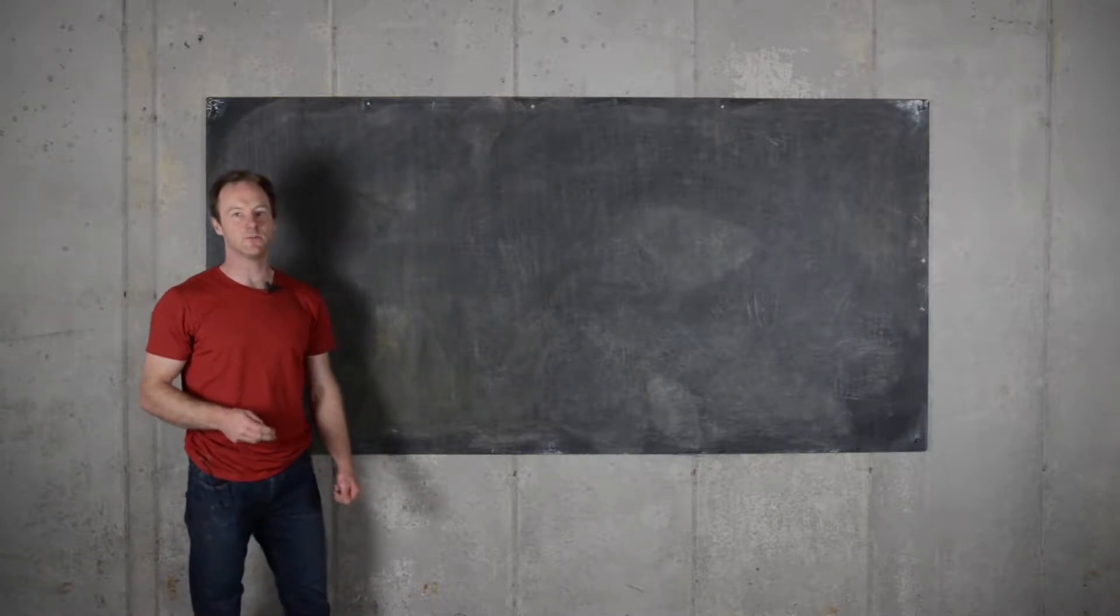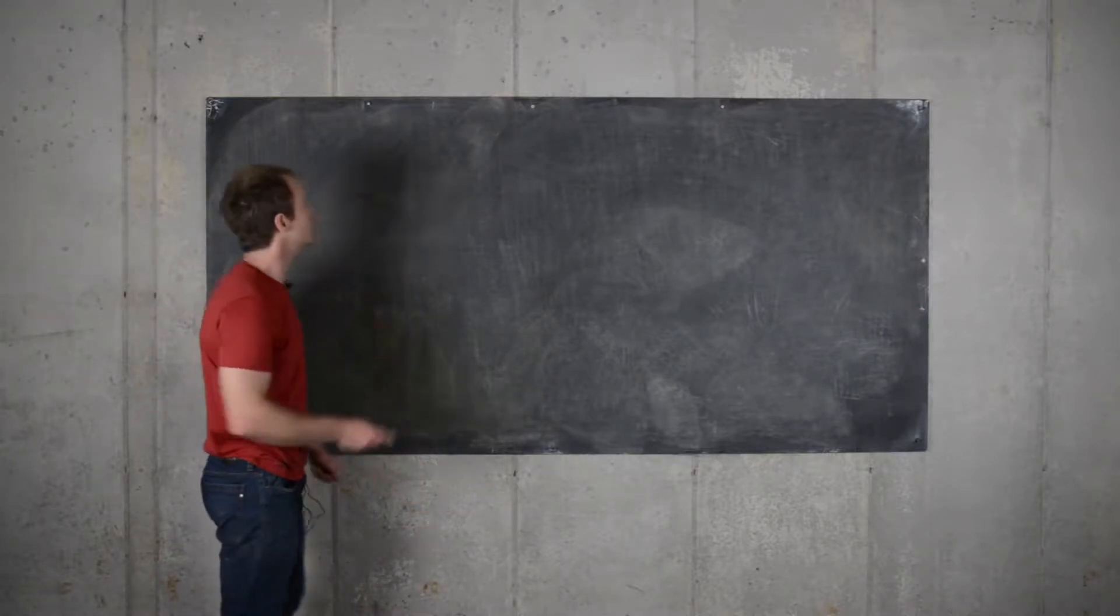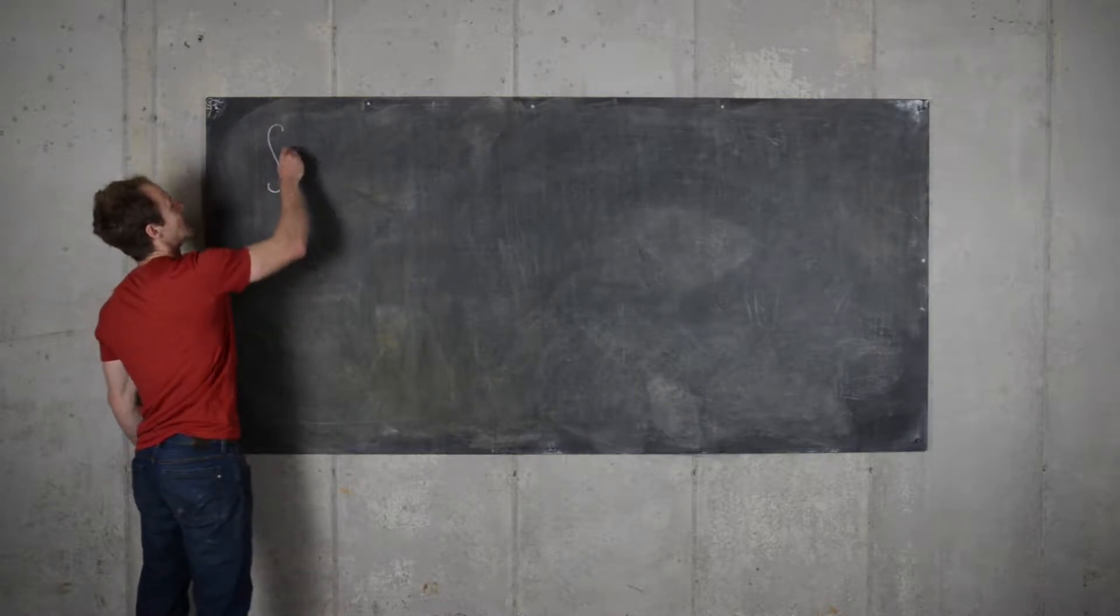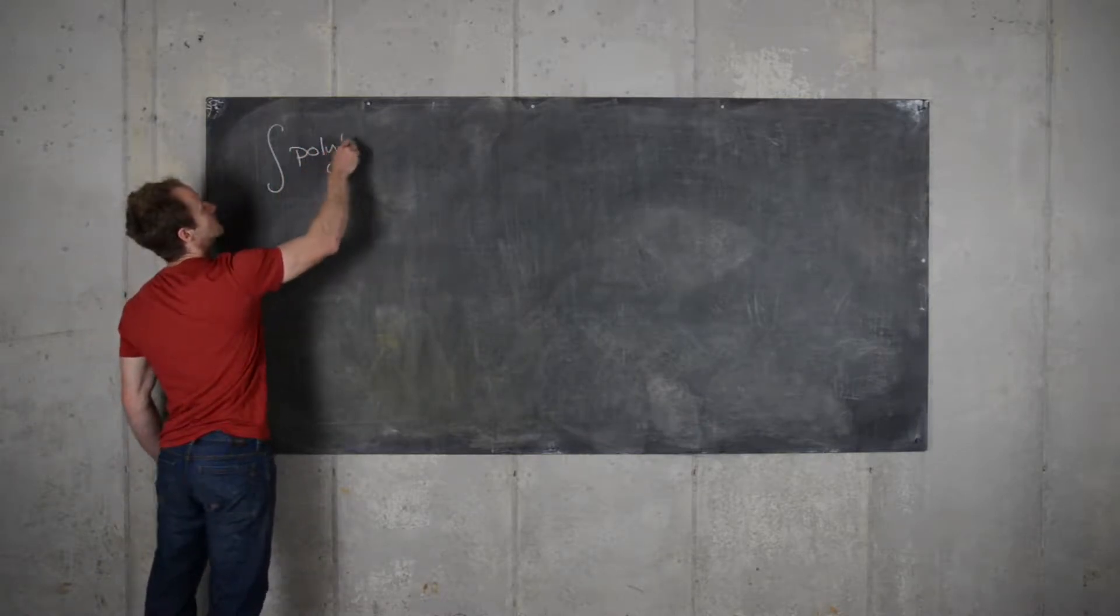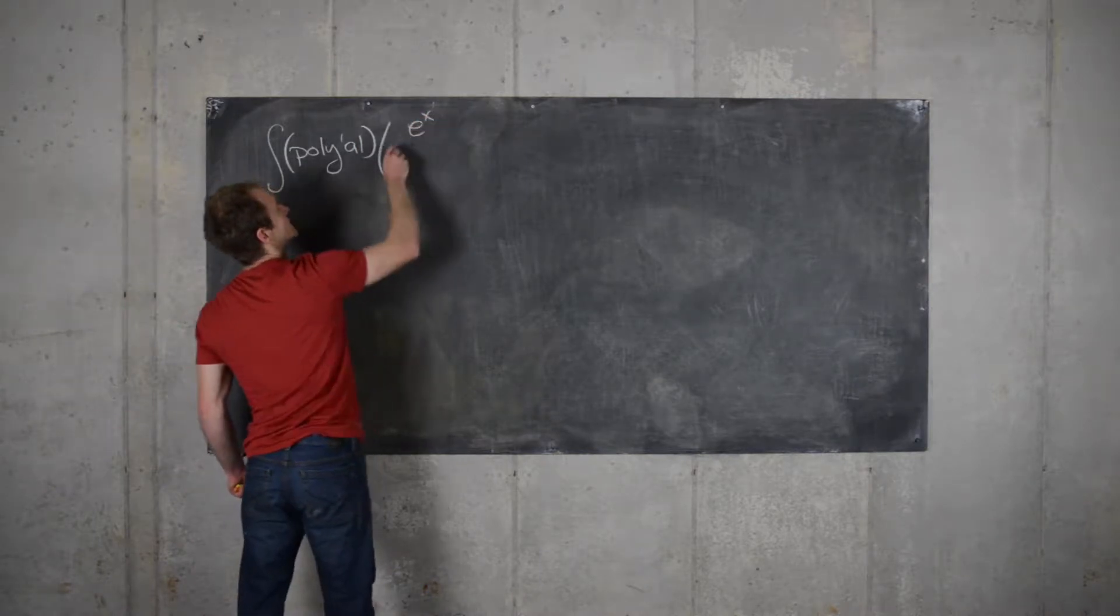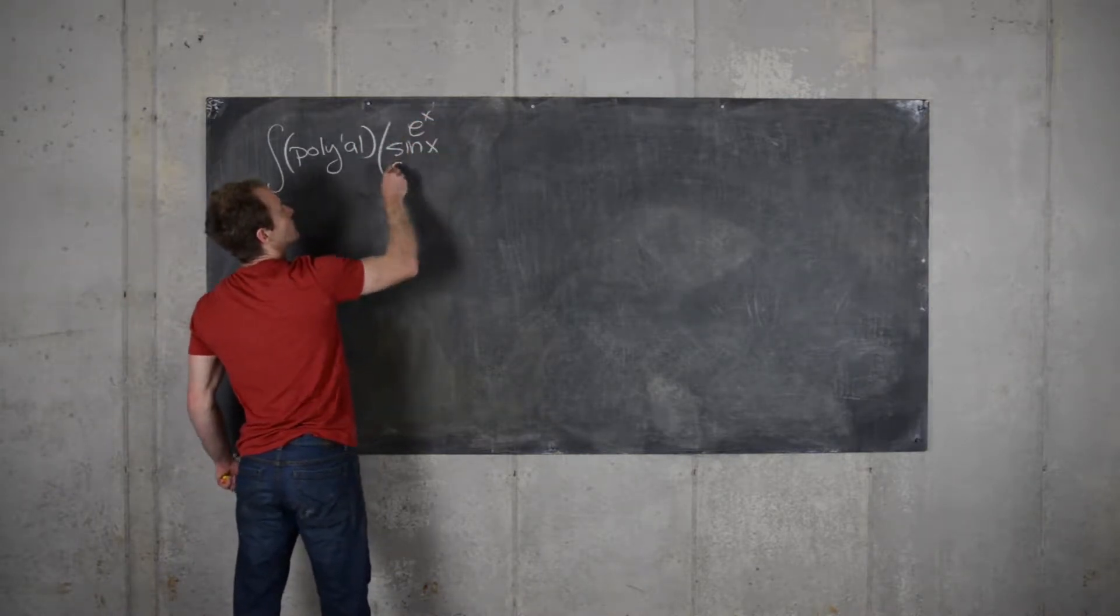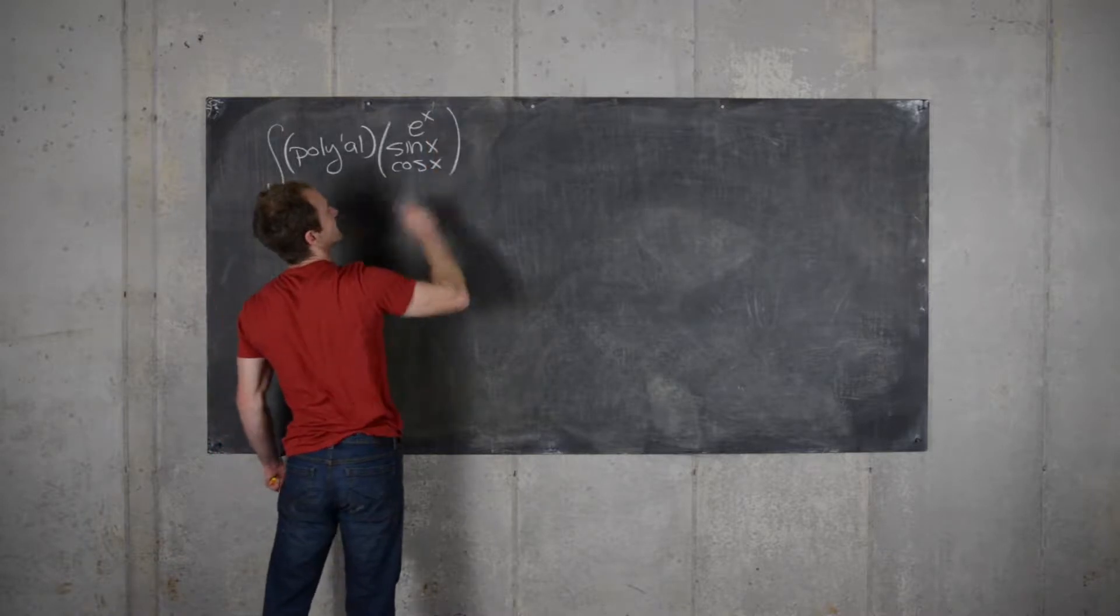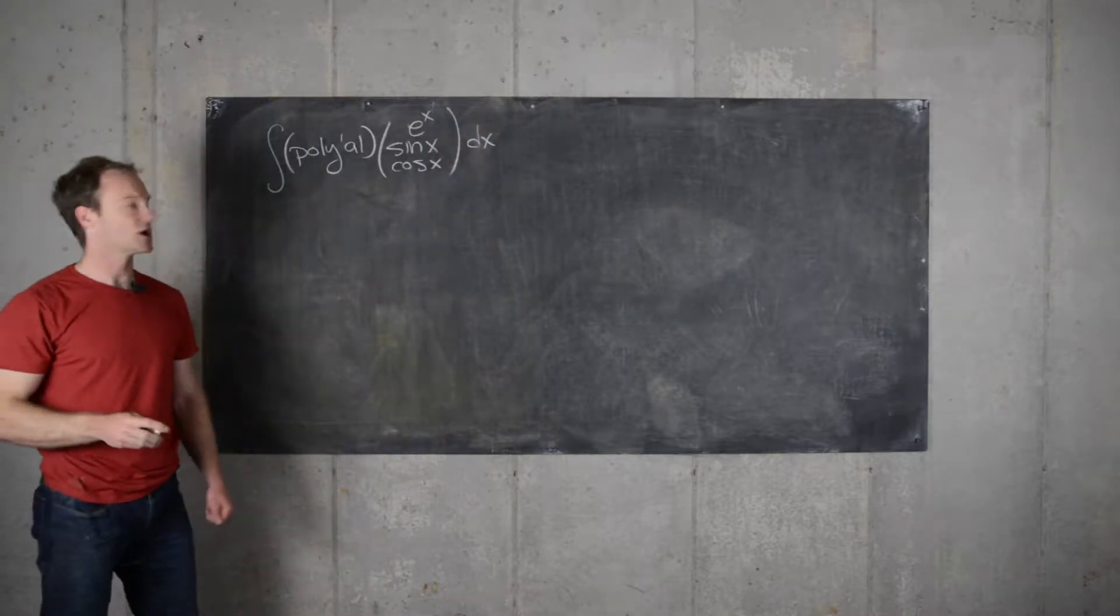Okay, here we're going to look at something I call a type 1 integration by parts problem. So the general setup is we have a polynomial times a transcendental function, usually some exponential or some nice trig function like sine of x or cosine of x.